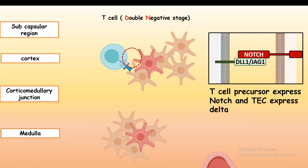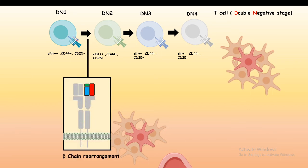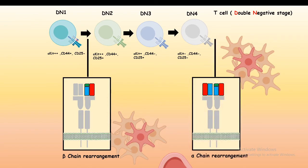Now we focus on how T cell receptor rearrangement takes place and how alpha beta or gamma delta T cells are produced. Even in the double negative stage, T cells can be divided into four sub-stages: DN1, DN2, DN3, and DN4, identified based on combinatorial surface receptor expression. Between DN1 and DN2, beta chain rearrangement takes place. After the DN4 stage, alpha chain rearrangement takes place, so at the end of DN4, the alpha-beta rearrangement is complete, which may give rise to a TCR containing alpha and beta chains.